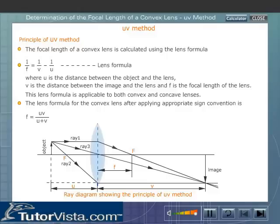The lens formula for the convex lens after applying appropriate sign convention is F is equal to UV by U plus V.